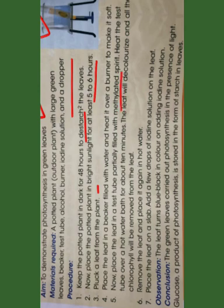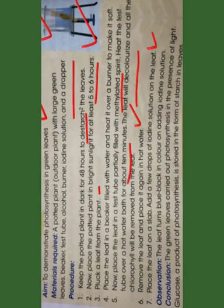After that, place the potted plant in bright sunlight for at least 5 to 6 hours so that photosynthesis takes place. Pluck one leaf from the plant and place it in a test tube partially filled with methylated spirit. Heat the test tube over a hot water bath for about 10 minutes. The leaf will decolorize because all the chlorophyll pigments are removed by the spirit.